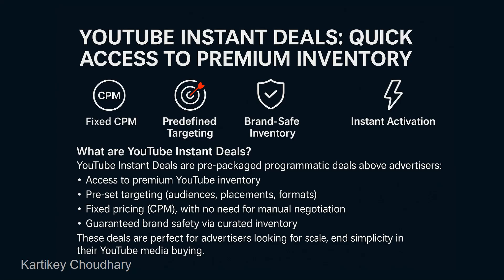The inventory is predefined brand-safe, because it is across the YouTube environment and all inventories are premium — so it falls under brand safety. Instant activation refers to reserved inventory, similar to a programmatic guaranteed deal but on YouTube. YouTube Instant Deals are pre-packaged programmatic deals for advertisers, giving access to premium inventory with preset audiences and fixed CPMs. In standard PG deals, we usually negotiate with publishers and try to close deals, but here it is fully automated programmatic buying, ensuring fixed CPM and brand safety through curated inventory.